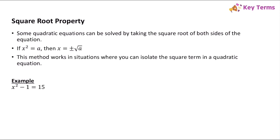For example, if we're solving x squared minus 1 equals 15, we can isolate the square term, which is x squared. We can do that by adding 1 to both sides. So that gives us x squared equals 15 plus 1, which is 16. Once you have the square term isolated — meaning it's by itself on one side of the equation — you can solve by taking the square root of both sides.